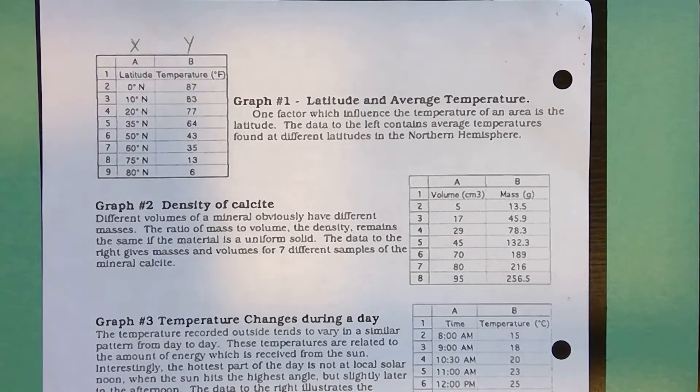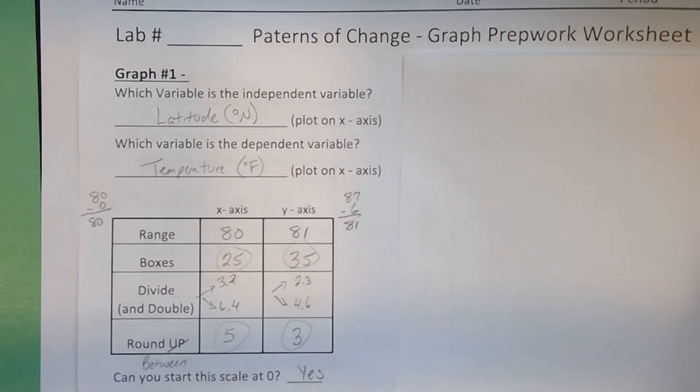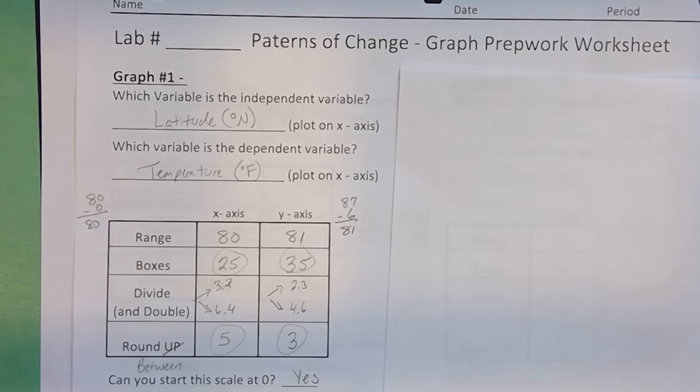Now, in class, we've already completed graph number one, but I want to take a look at what we did. You always have to identify the independent variable and the dependent variable. So latitude determines the temperature. We're doing range, boxes, divide. If that's not a really nice number, then we double. And we round between to see what each small little interval is. So we graphed with the interval being 5 on the x-axis and being 3 on the y-axis.